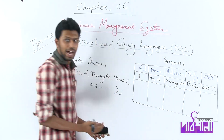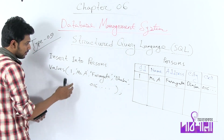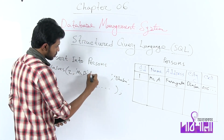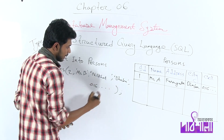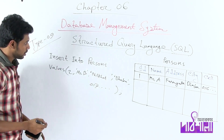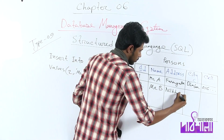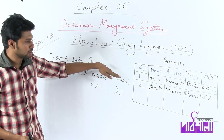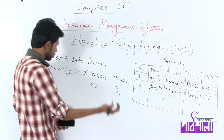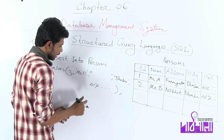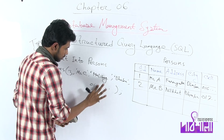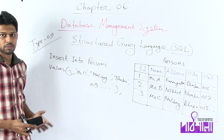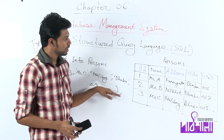You can click on it to run. If you want to insert another row of data, you can change the values. For ID 2, the name is 'Mr. B', and the address is different. You must confirm and insert all the data. When you run the INSERT INTO statement, you can change the values of the data as needed.